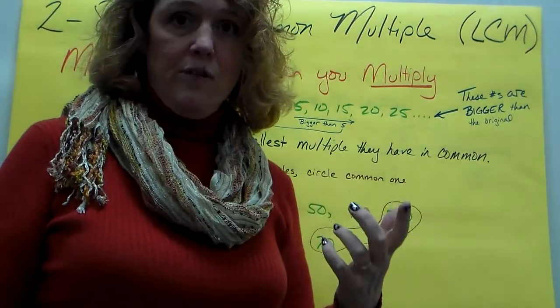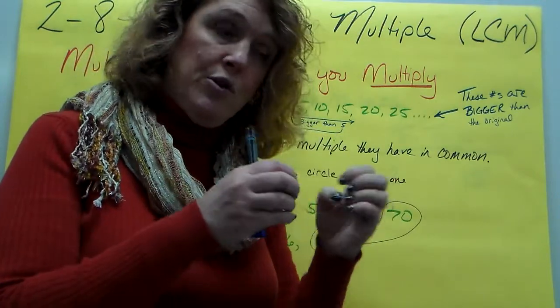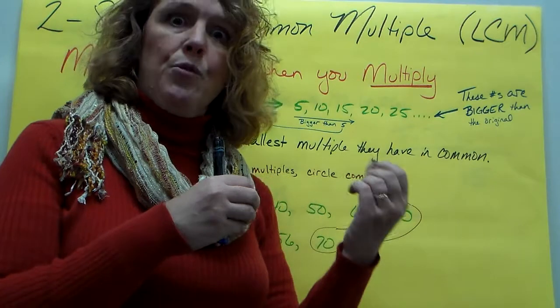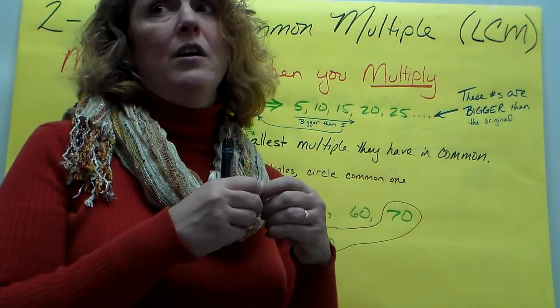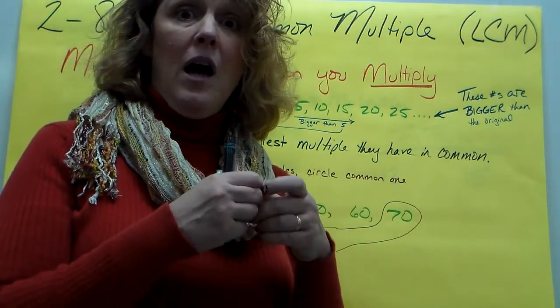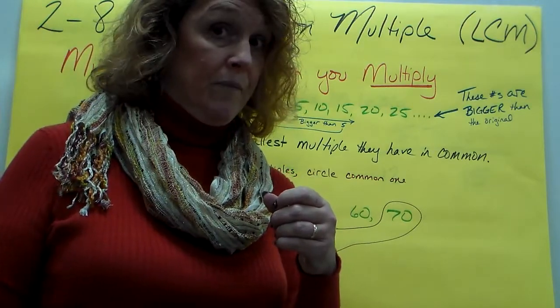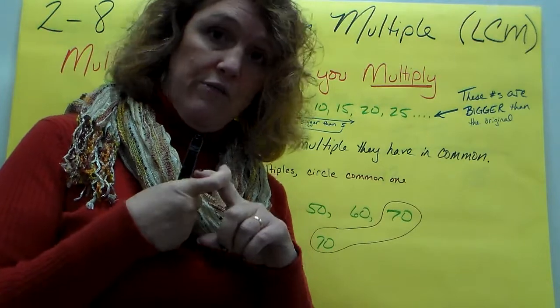Greatest Common Factor, factors are the small numbers you multiply together to get that. So a factor of 12 would be 3 and 4, but a multiple of 12 would be 24, 36, 48. It's really easy to get those confused.